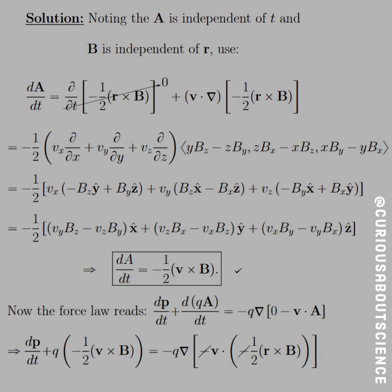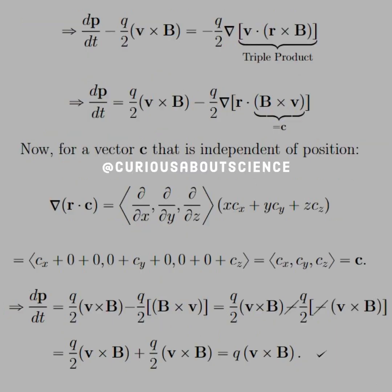Now the force law reads dp/dt + d(qA)/dt is equal to negative q gradient of (0 - v·A), because our scalar potential here was 0. So if we plug all these in, what we see here is that we get a q, and then we have dA/dt. So we factor the q out and just plug in a result we just found. And then on the other side, we go with the A again as well, and we just plug in the negative one-half r cross B. Clearly we get some cancellations of the negative, and we have a lot of simplifying to do.